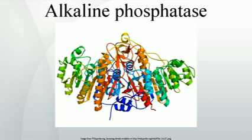In humans, alkaline phosphatase is present in all tissues throughout the entire body, but is particularly concentrated in the liver, bile duct, kidney, bone, and the placenta. Humans and most other mammals contain the following alkaline phosphatase isozymes.